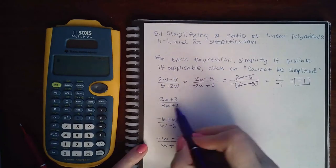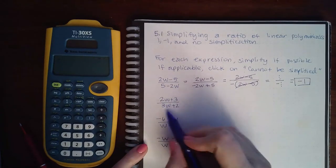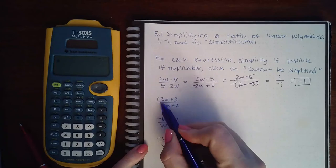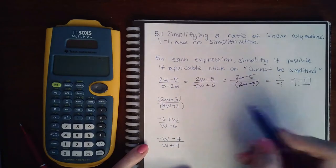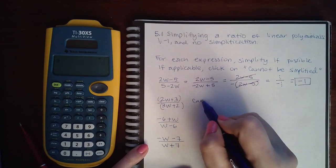Now here, they are already in order. I cannot factor anything, and this factor is not the exact same as that one. So this one cannot be simplified.